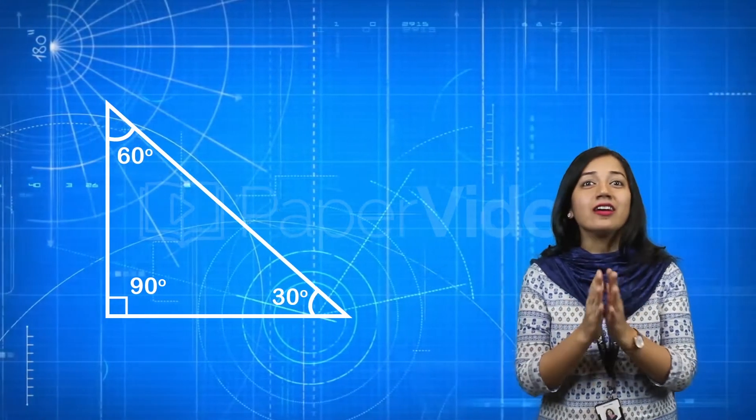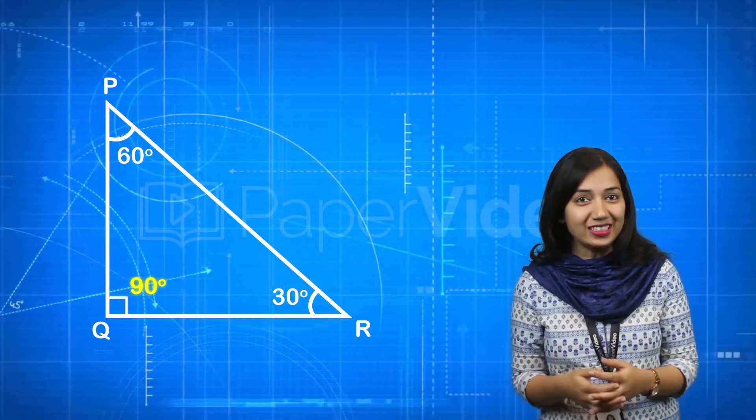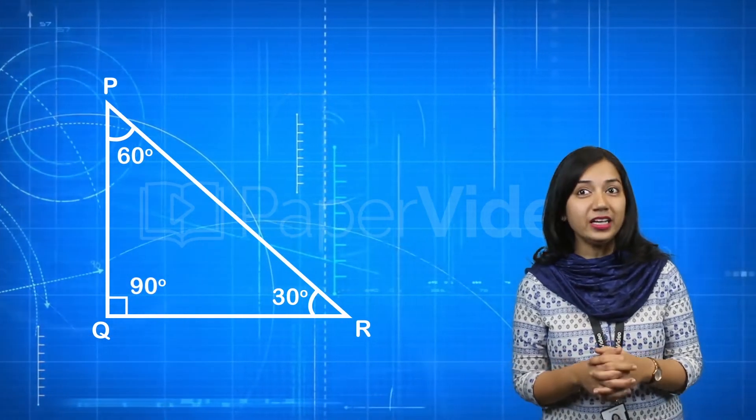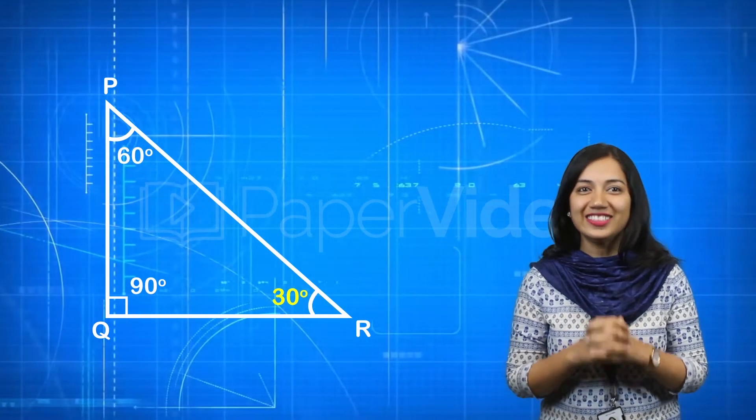So consider a right angle triangle PQR where measure of angle Q is 90 degree, measure of angle P is 60 degree and measure of angle R is 30 degree.